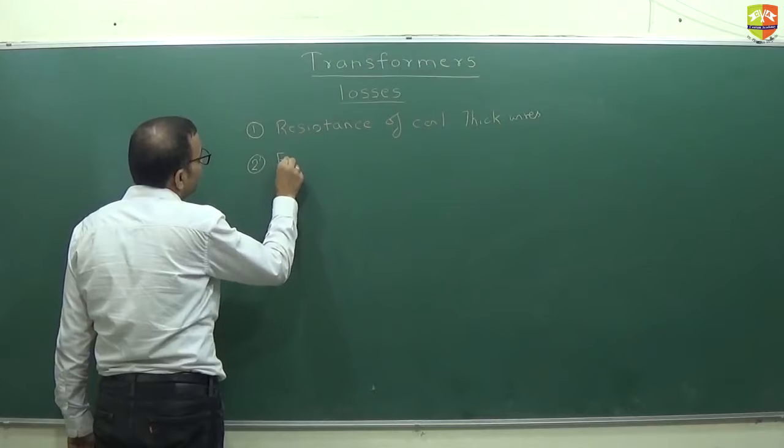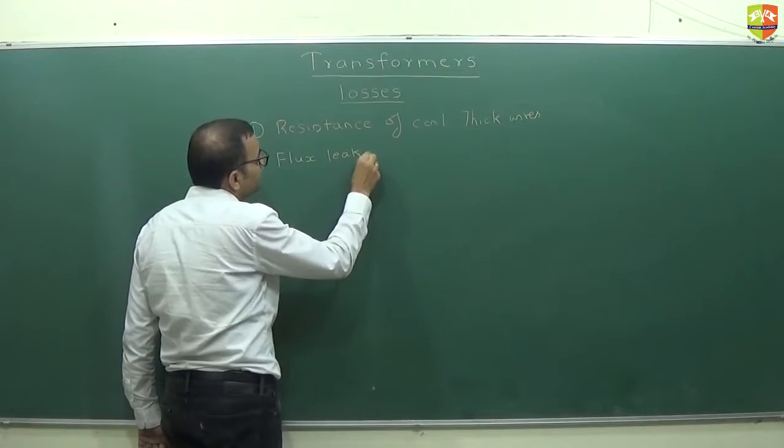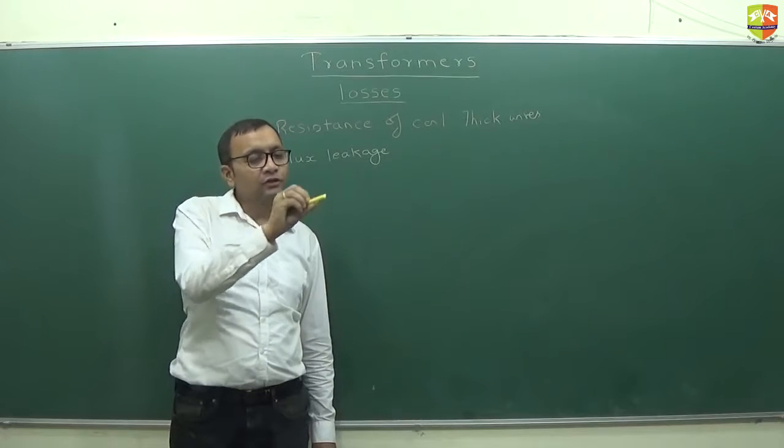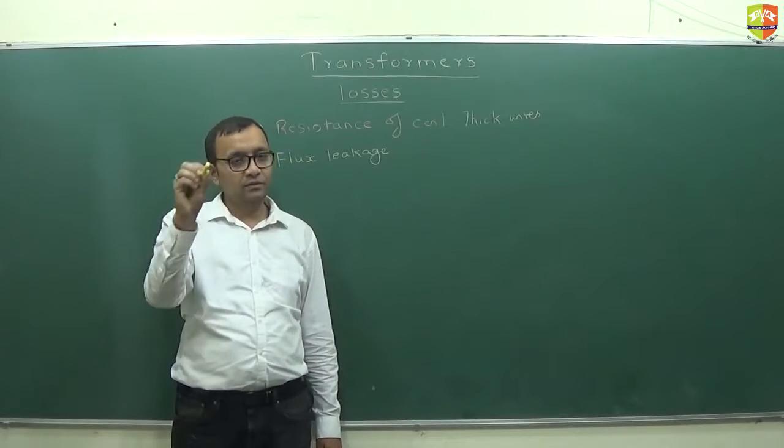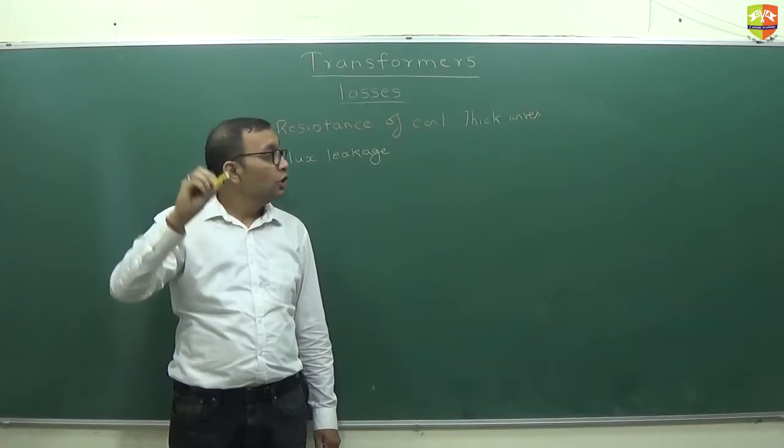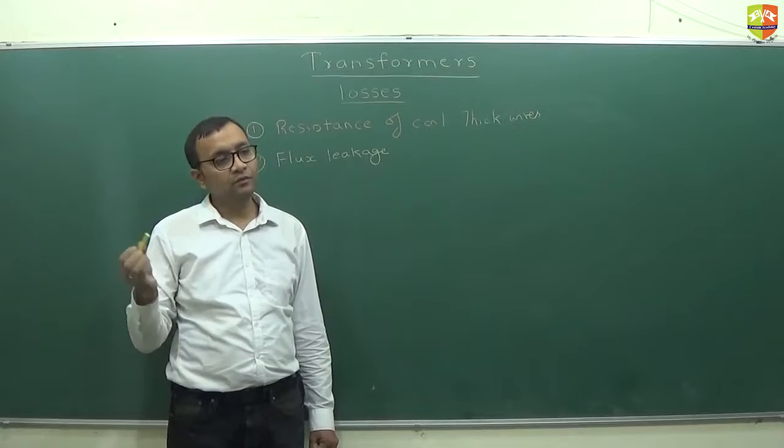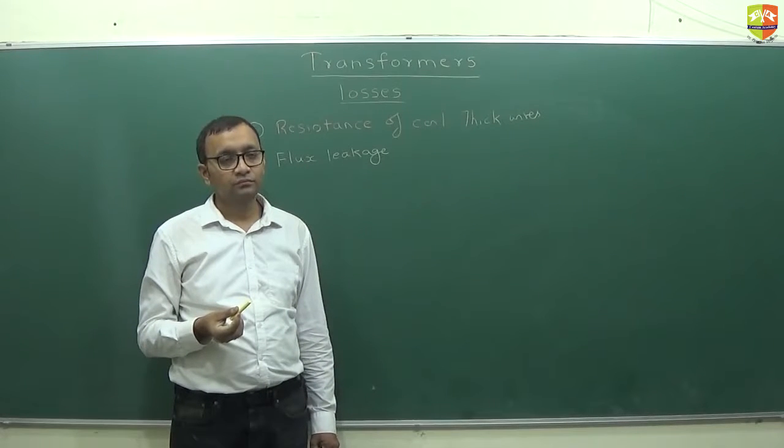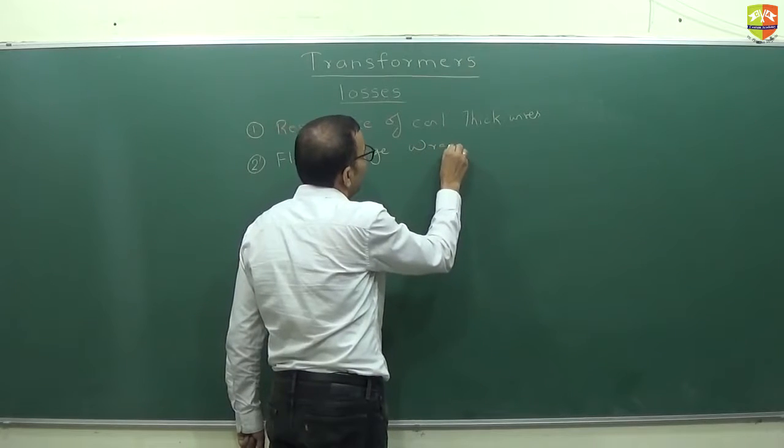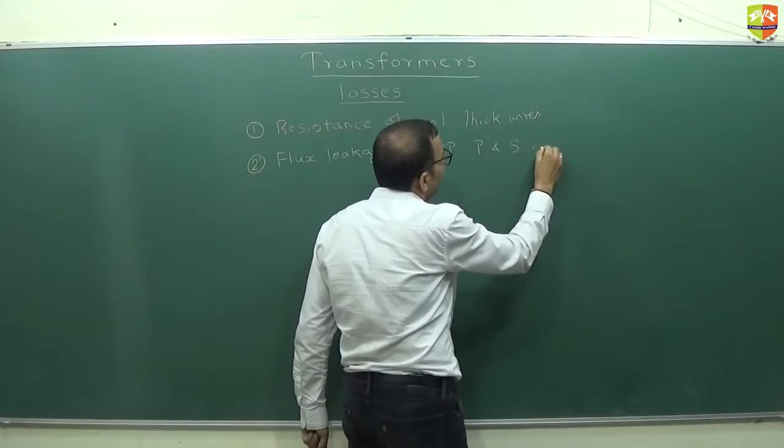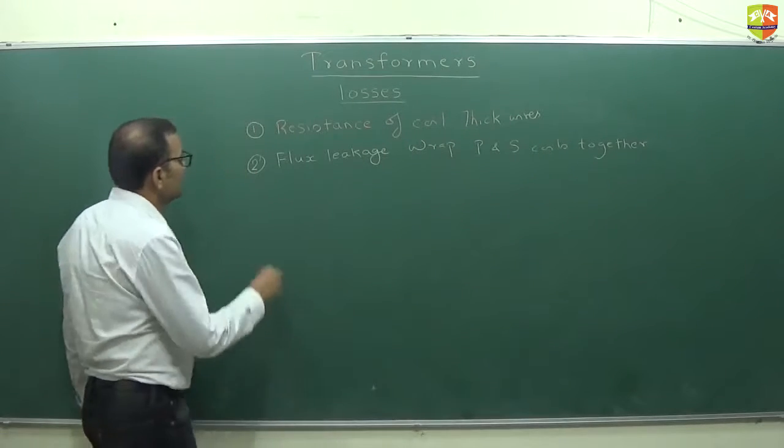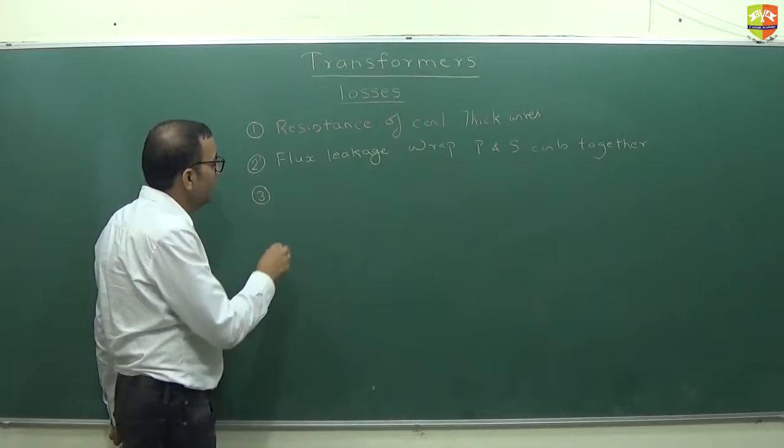Second, write down flux leakage. See, whatever is the flux that is created, we are assuming it goes like this and then goes to secondary. It need not be as good as this. Some of the flux may leak away to the atmosphere. So that is what flux leakage is. In order to minimize this, what should we do? Use I-type. Right? So you wrap primary and secondary coil together, as in on top of each other.